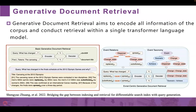Generative Document Retrieval aims to encode all information over the corpus and conduct retrieval within a single language model. Given a query, the model directly outputs the document identifier as retrieval results.